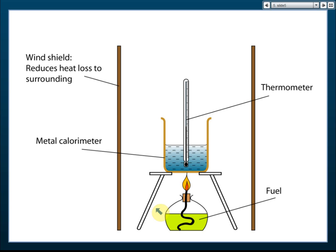You need to know this apparatus setup because exam questions may ask you to draw it, identify the function of each part, or state precaution steps for getting the most accurate result. In summary: measure the mass of fuel to find moles burned, measure the temperature change to find heat absorbed, then divide heat absorbed by number of moles to get the heat of combustion.